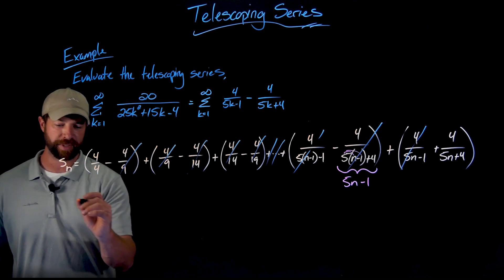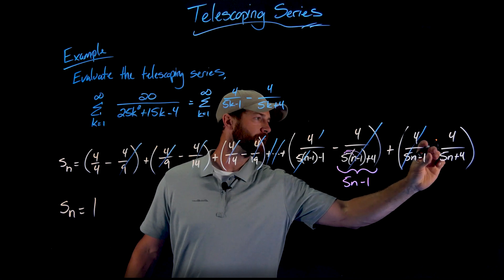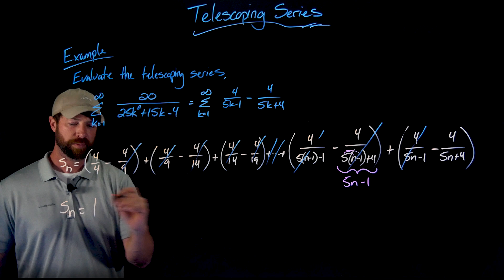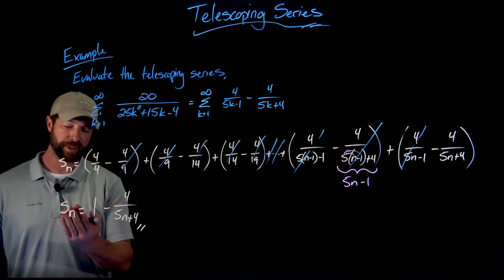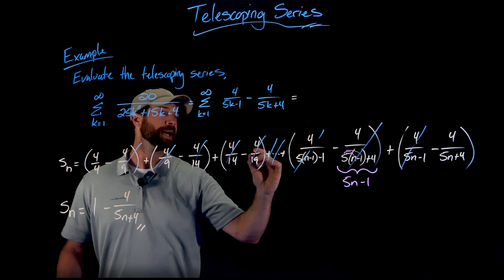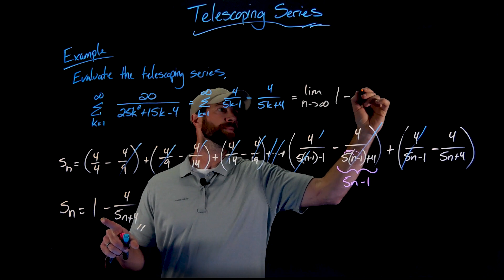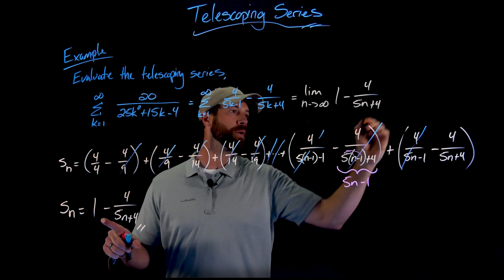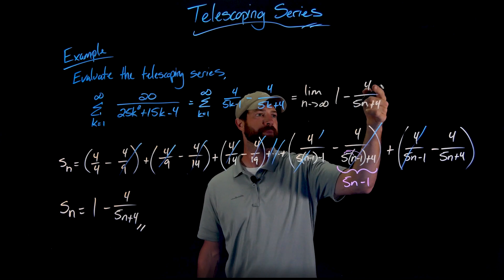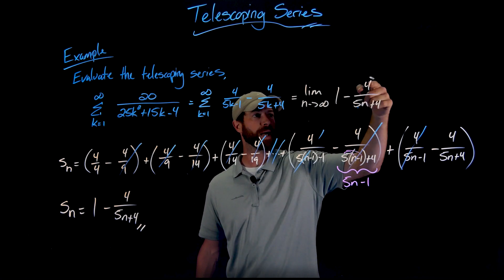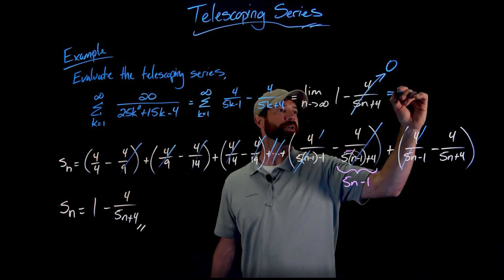The only terms left in the nth partial sum are the very first term, four over four which equals one, minus the very last term, minus four over 5n plus four. We've found an explicit formula for the nth partial sum. Taking the limit as n goes to infinity: the one is constant and stays, and four over 5n plus four — a rational term with denominator of higher degree than the numerator — goes to zero. So this infinite series converges to one.